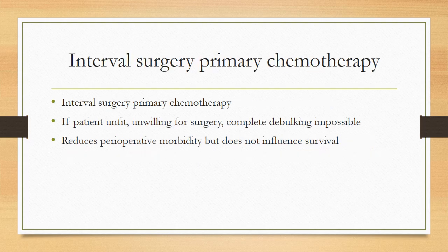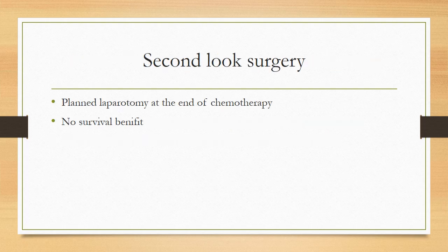Interval surgery: if the patient is unfit or unwilling for surgery, or complete debulking is impossible, we first give 6 cycles of chemotherapy 3 weeks apart and then perform surgery afterwards. This reduces perioperative morbidity but does not influence survival. Second-look surgery — planned laparotomy at the end of chemotherapy — has no survival benefits and is not recommended.